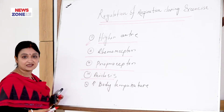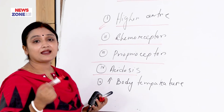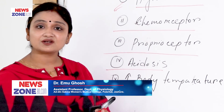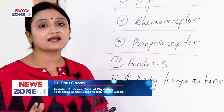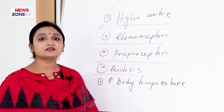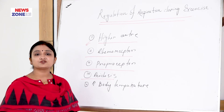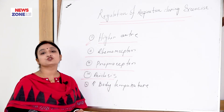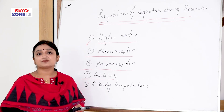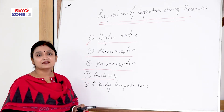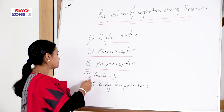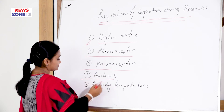The fourth point is acidosis. Similar to the chemoreceptor mechanism, there is an increase in hydrogen ion concentration during exercise. Due to this increase in hydrogen ion concentration, the body develops an acidosis state, which stimulates the chemoreceptors. Stimulation of the chemoreceptors ultimately causes stimulation of the respiratory center, thereby increasing the rate and depth of respiration.